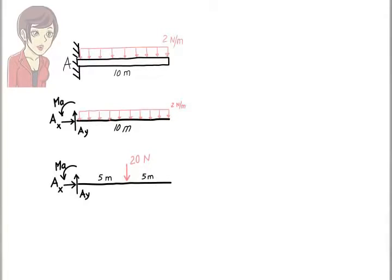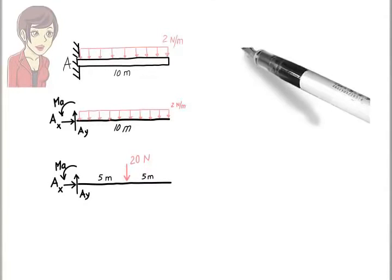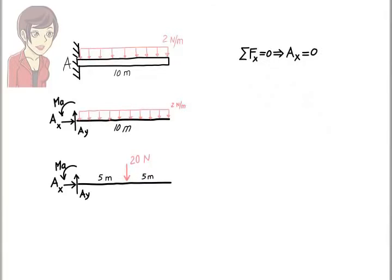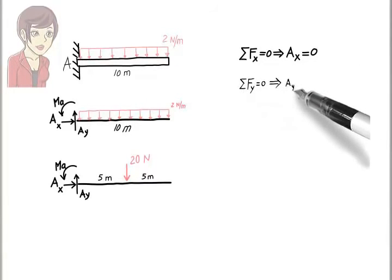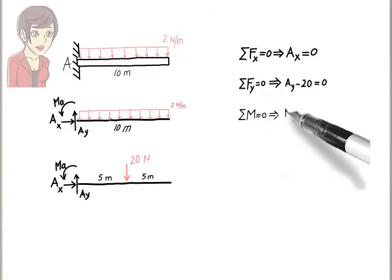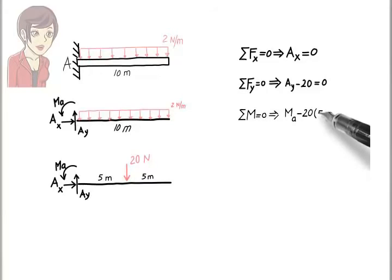Now, we can write the equilibrium equations. AX equals zero. AY minus 20 equals zero. MA minus 20 times 5 equals zero.